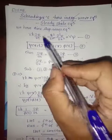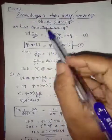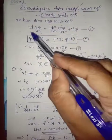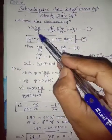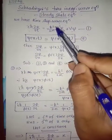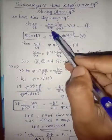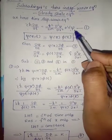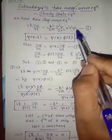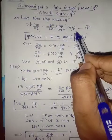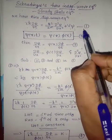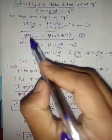What is our time-dependent wave equation? iħ ∂ψ/∂t is equal to −ħ²/2m · ∂²ψ/∂x² + Vψ. This is our time-dependent wave equation, and this is equation number one.